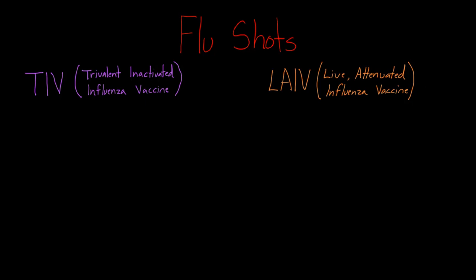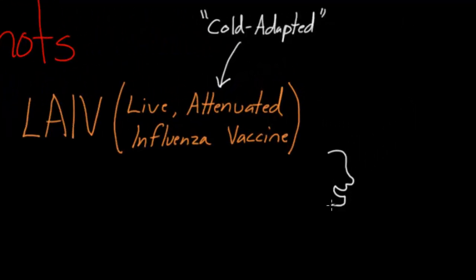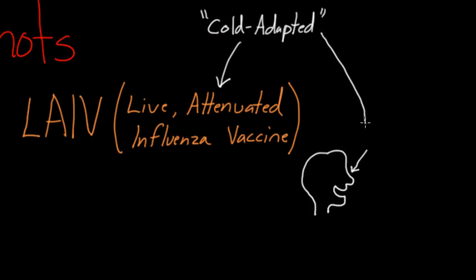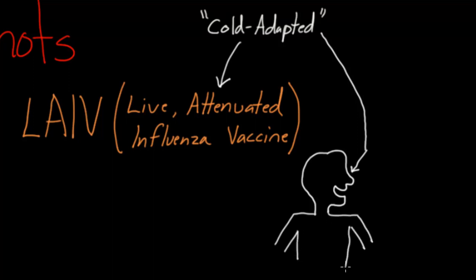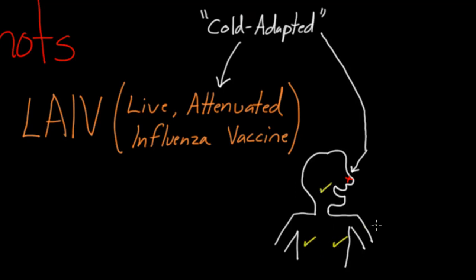Let me take a moment to talk about the word attenuated. You might also hear the term cold adapted. What they do is literally chemically change and modify the virus so that it's still alive, but it can really only cause problems in your nose, because that's the only cold area. So cold adapted refers to the fact that it's only going to cause problems in your nose. If the virus goes deeper into your body where it's warmer, it will have no effect. So the virus can cause a runny nose or a little congestion for people that get this vaccine, but it won't cause any problems in your throat or lungs because it's weakened.